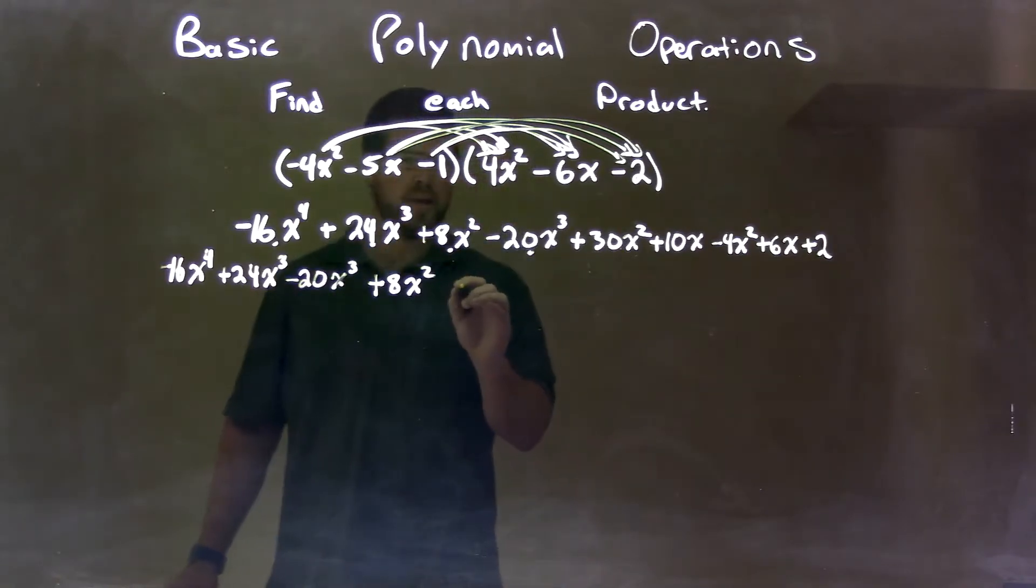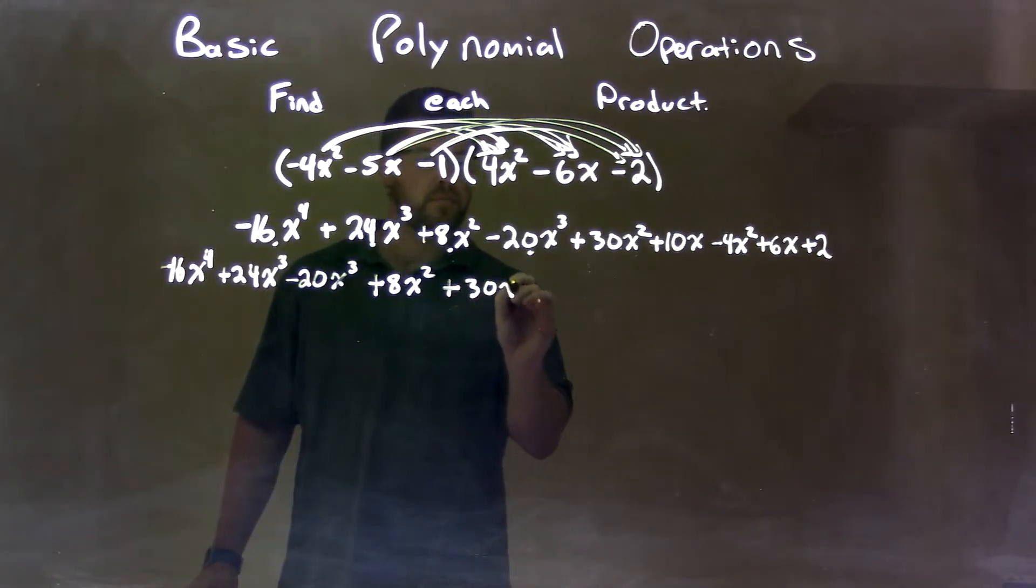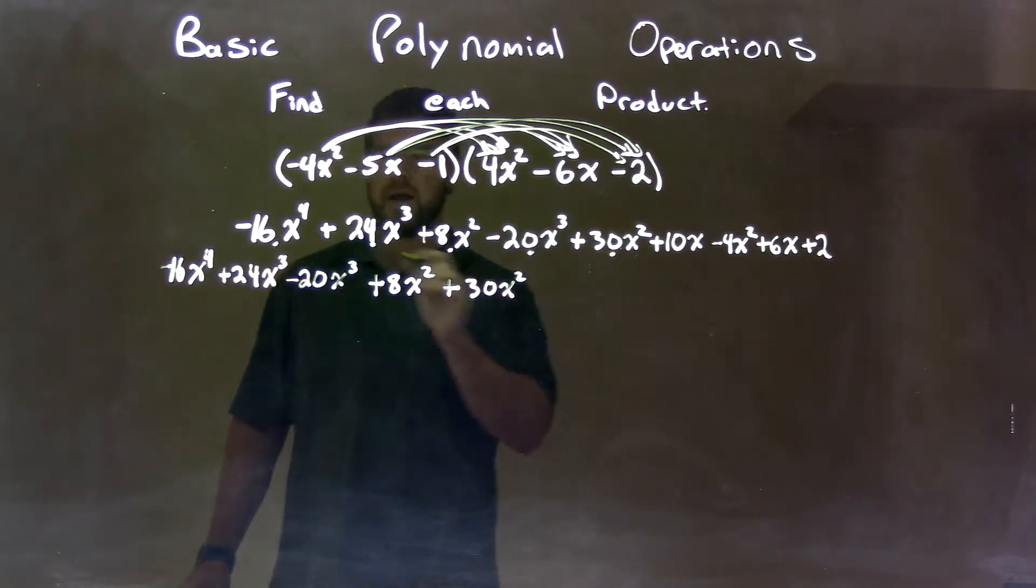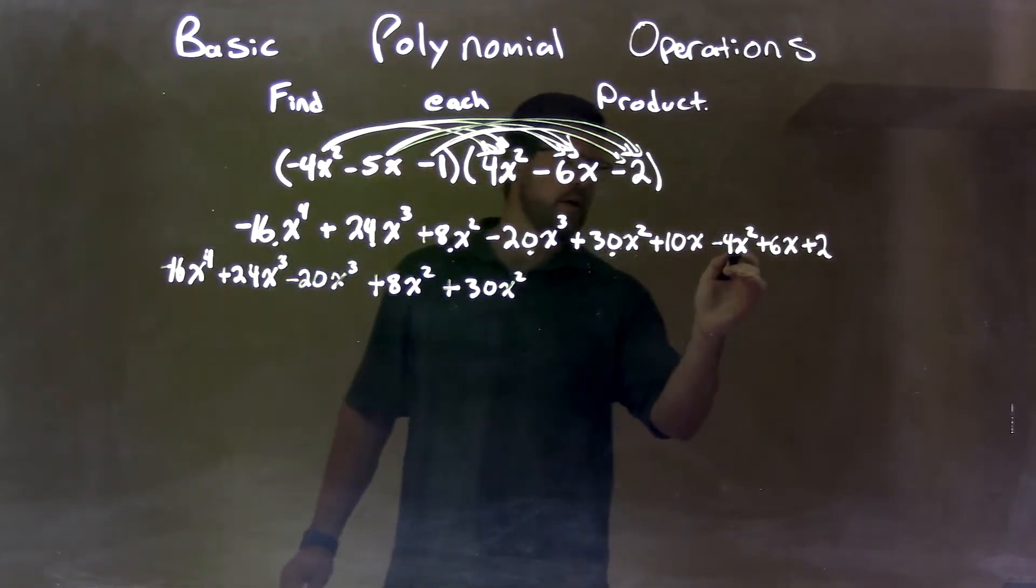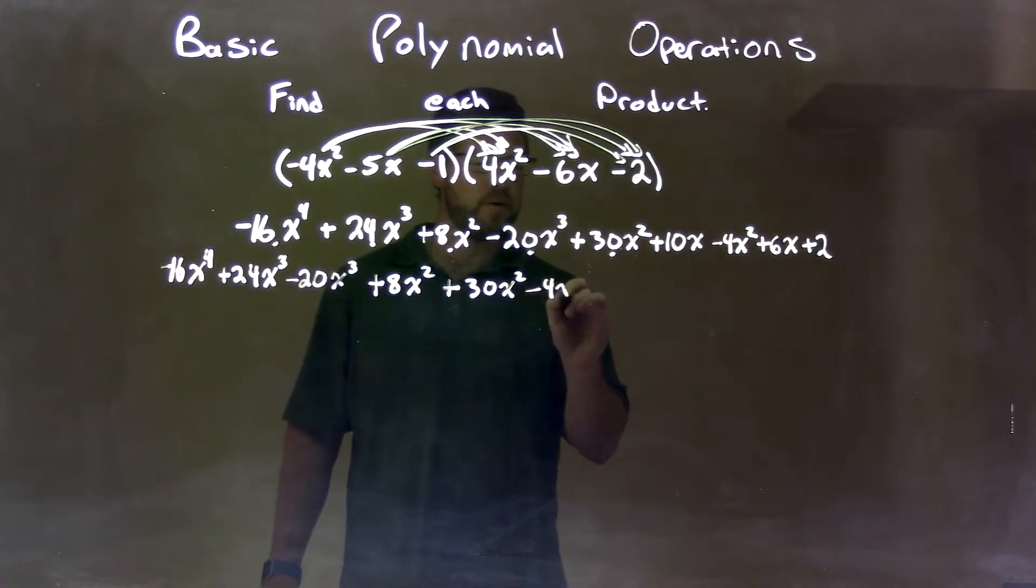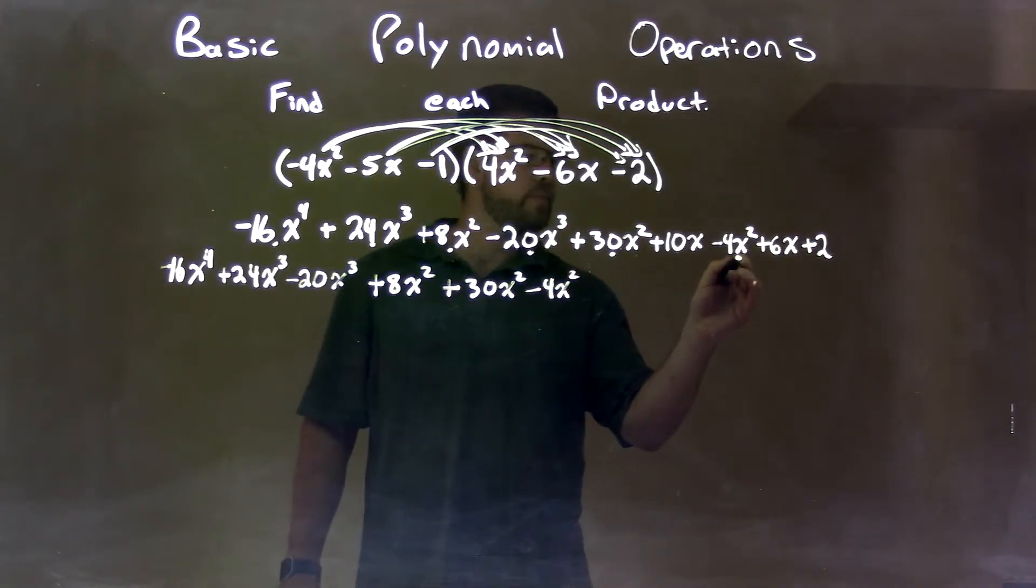Bring down our 30x squared. We brought everything down so far. And the last x squared is minus 4x squared.